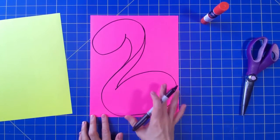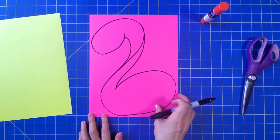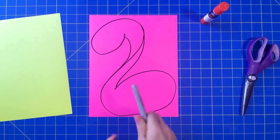So that's your flamingo's body. The next thing you want to do is cut this out.